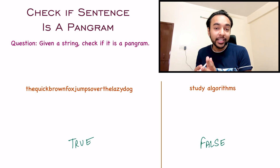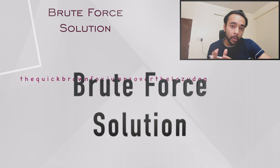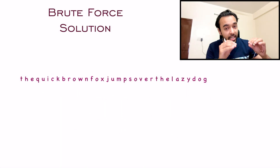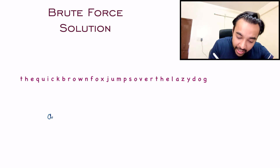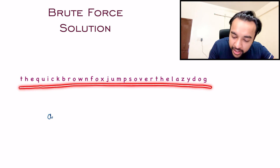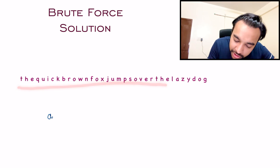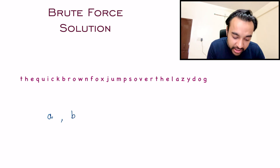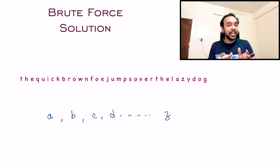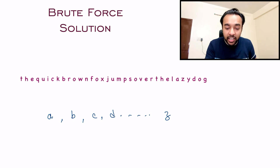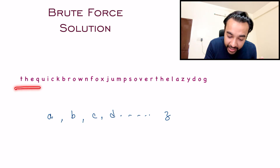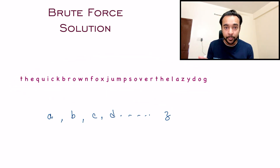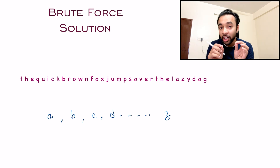This problem is relatively very simple to understand. So how do you go about solving it? When you think about this problem in the most naive way, what you can do is start with each and every character. You start with the character A and then you will try to find this character in the string. You start traversing the string from the beginning and you find an A — so you are good. Similarly, you will start with the next character B, traverse your string, and find a B. You will do this for every character all the way up to Z. If you are able to find each and every character, then yes, this string is a pangram. If at any moment you encounter a character, let's say X, and you do not find the character X anywhere in the string, then this string will not be a pangram and you can return false.